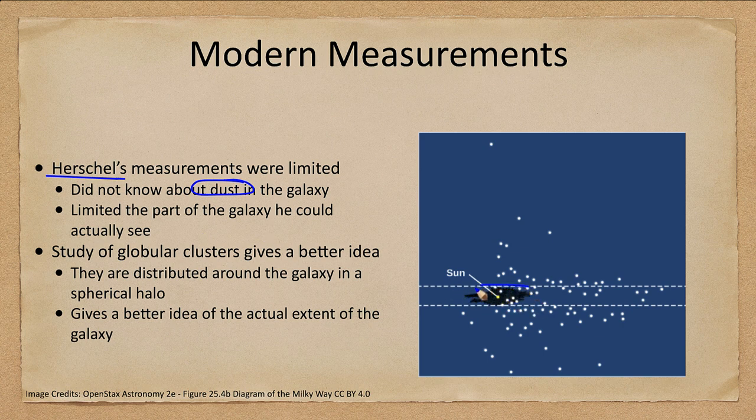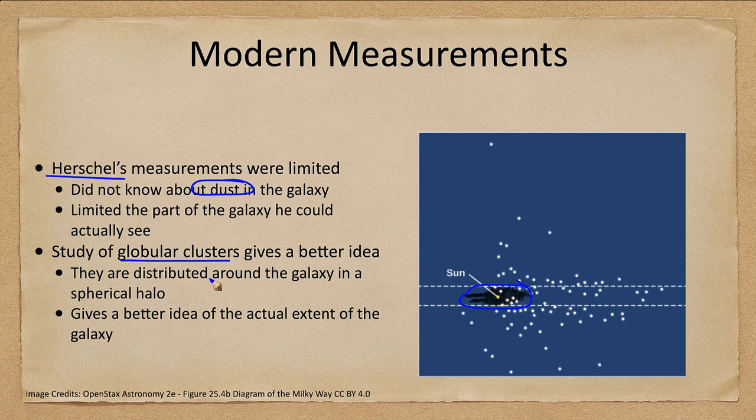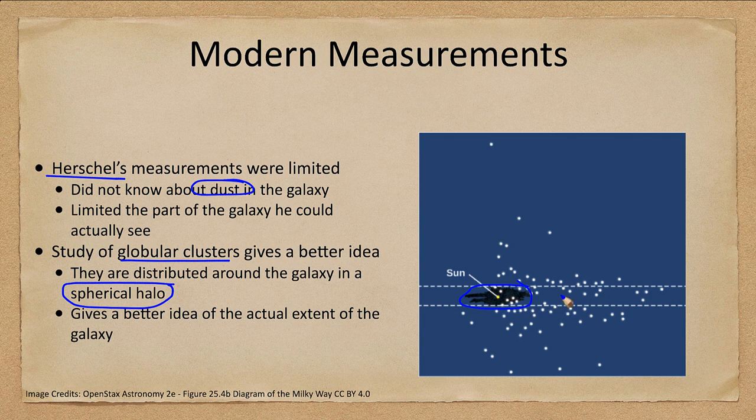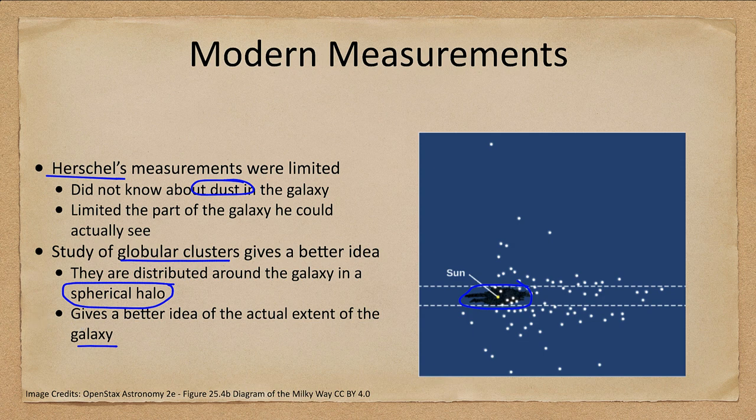Here we see Herschel's map and the dots are globular clusters. Globular clusters give a better idea of the distribution of the galaxy. They are distributed around the galaxy in a spherical halo. That allows you to get a better idea of where the central portion of this galaxy might be, finding the center of the globular cluster distribution. This gives us a much better idea of the distribution and the actual extent of our galaxy.